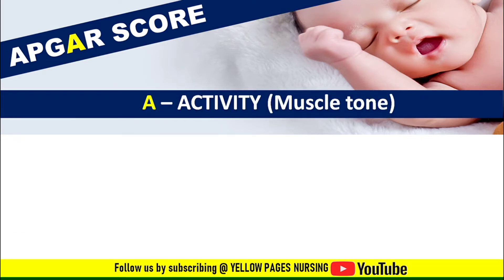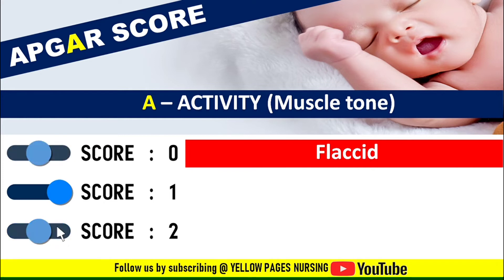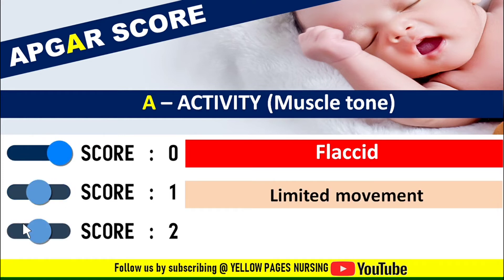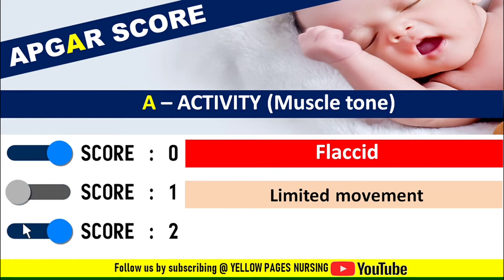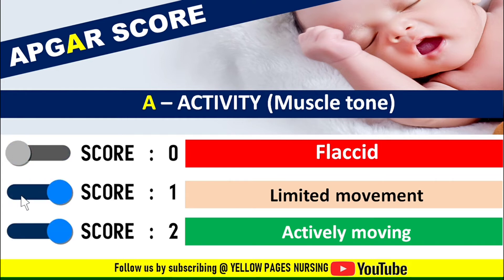Next comes Activity, or muscle tone. Score 0 indicates flaccid — if the muscles are loose and floppy, the infant scores 0. Score 1 indicates limited movement, meaning there is some muscle tone and the infant scores 1. Score 2 indicates actively moving — if there is active motion, the infant scores 2.